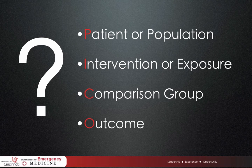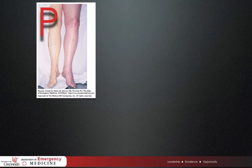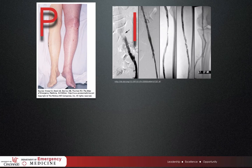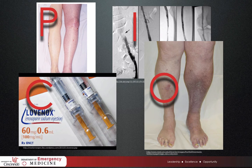Looking at that last question we posed — will catheter-directed TPA prevent post-thrombotic syndrome? — you can see the population is patients with DVT, the intervention is catheter-directed thrombolysis, the comparison would be standard therapy, and the outcome is post-thrombotic syndrome.